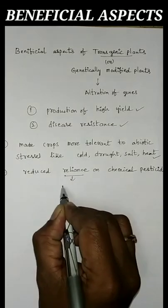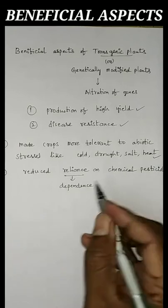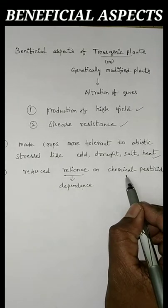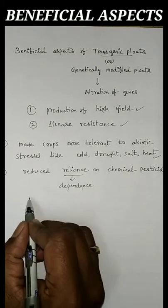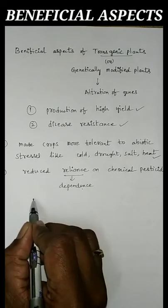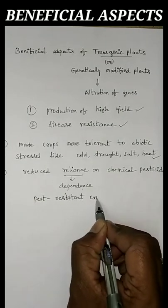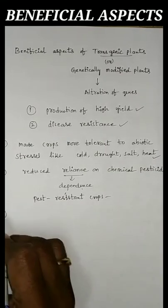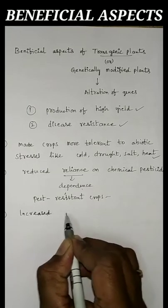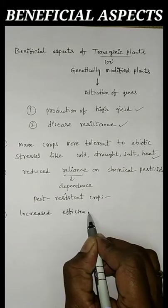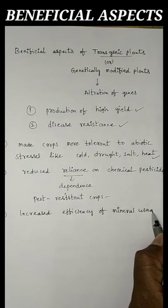Reliance means dependence. By using transgenic plants, we can reduce our dependence on chemical pesticides. The plants produced in this way are called as pest resistant crops. Another aspect is that transgenic plants are useful in increasing efficiency of mineral usage by plants.